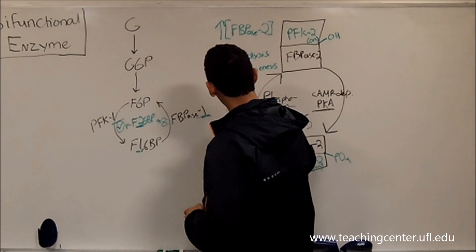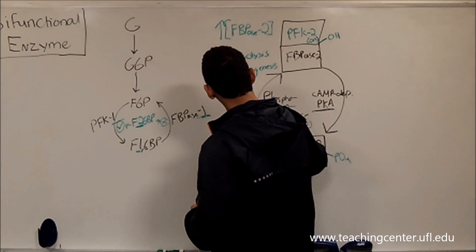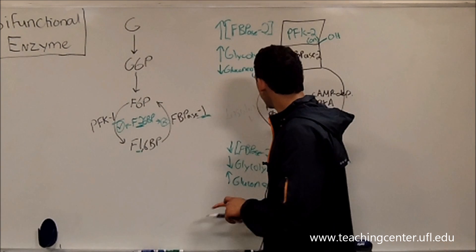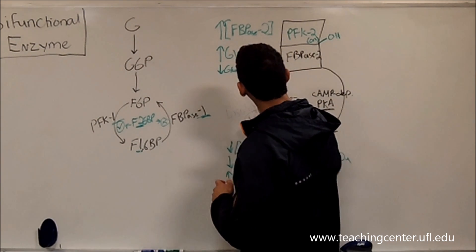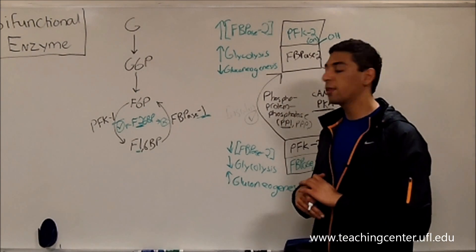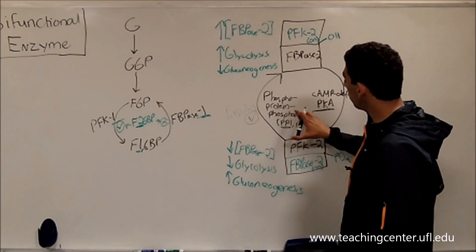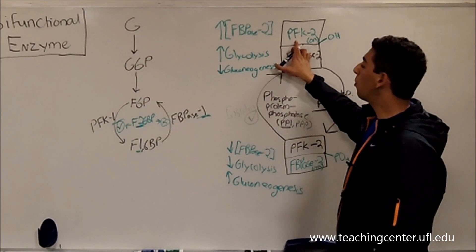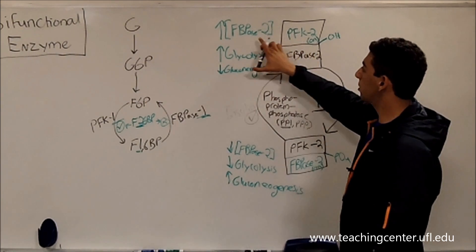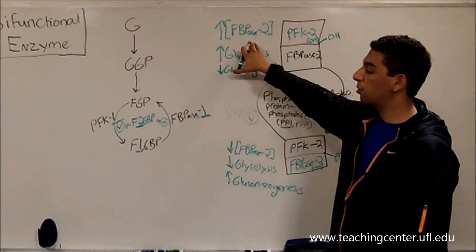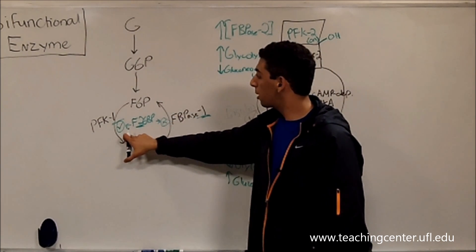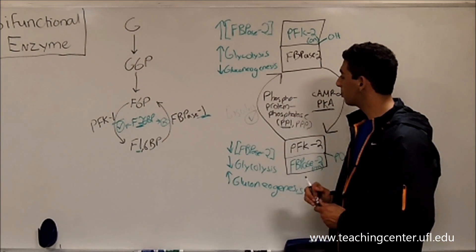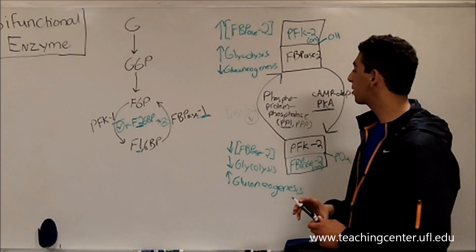Insulin activates the PP1 side. By activating PP1, it makes the bifunctional enzyme go to the state where PFK2 is turned on, which means you have a high concentration of the regulatory molecule, which means glycolysis is promoted — which is exactly what insulin wants.